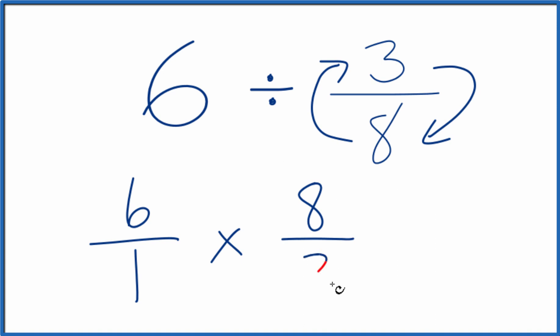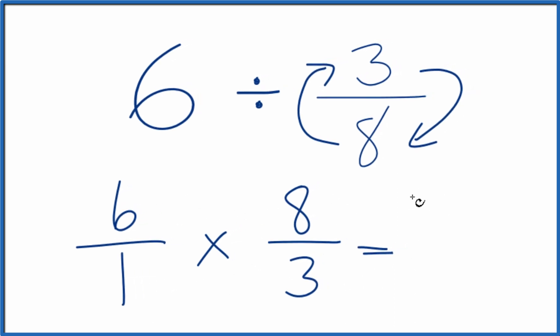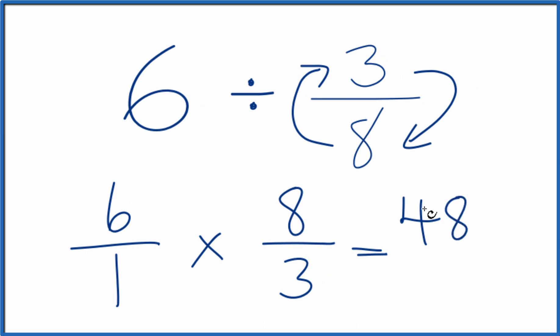So now we can multiply our fractions. And when we multiply fractions, we multiply the numerators and then the denominators. 6 times 8, that's 48. And then 1 times 3, that's 3.